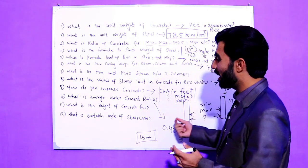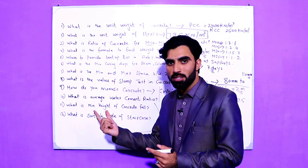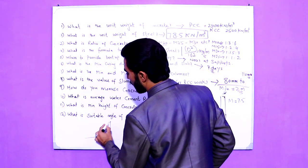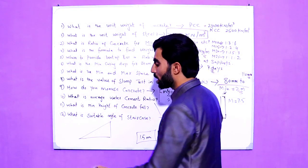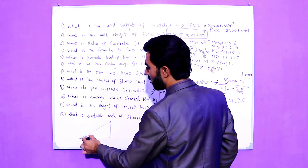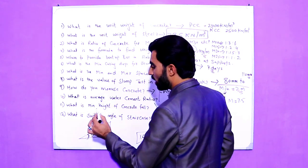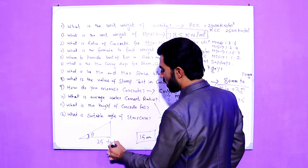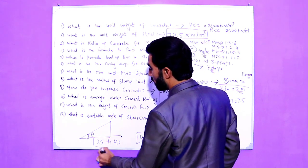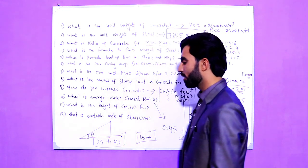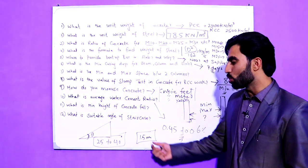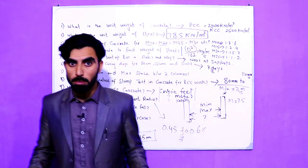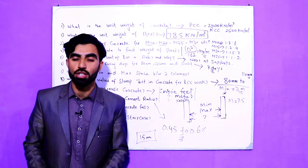The last question is: what is the suitable angle of a staircase? As you can see in the diagram, this is the cross-section of a staircase. The angle theta should be between 25 to 40 degrees. This is the suitable angle for staircases in commercial buildings, houses, hospitals, or any building.